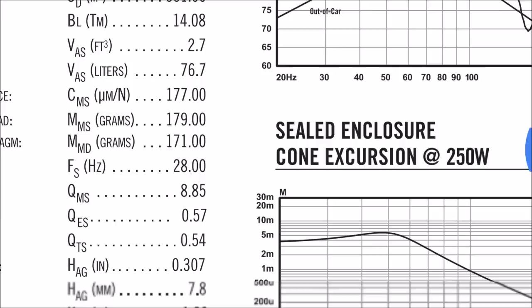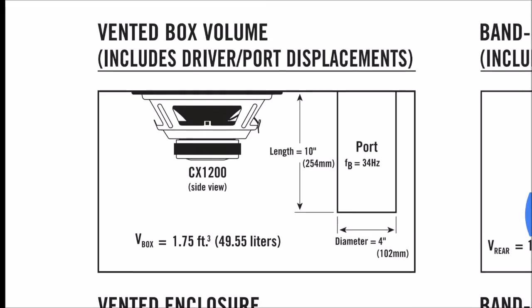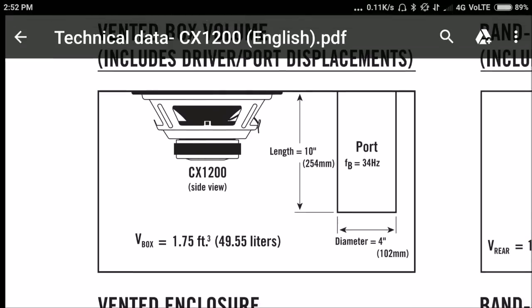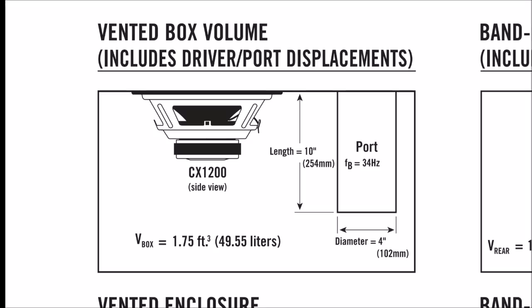This is the vented box — the bass reflex box. The bass reflex box requires 1.75 ft³. It's very clear. It's very important to know the internal volume.